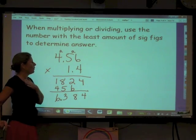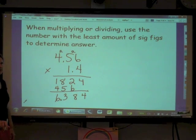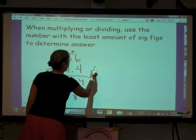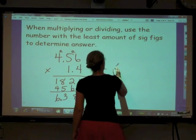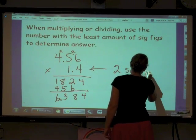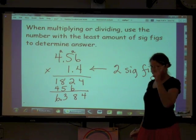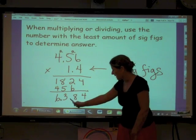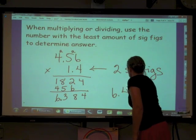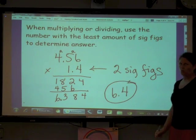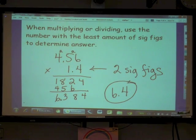And so which of these two numbers, 4.56 or 1.4, has the least number of significant figures? It's this one. It's 1.4. And how many significant figures does it have? It's got 2 sig figs. So that means that I have to round my answer to 2 sig figs. So that means I'm going to go to the tenths place. So I'm going to round up and my answer is going to be 6.4. That's it.